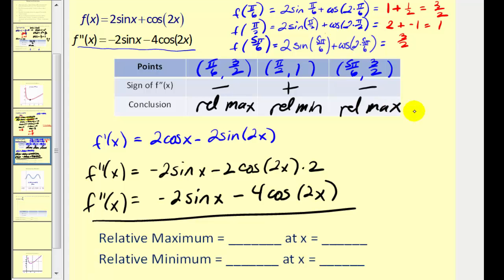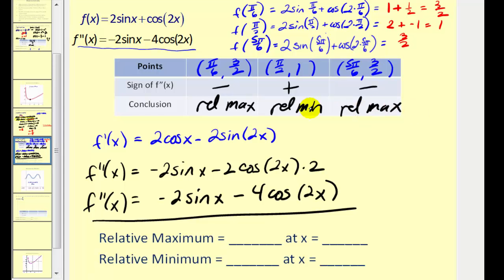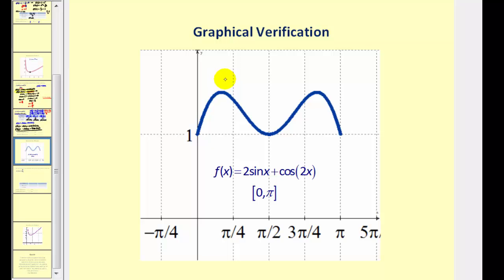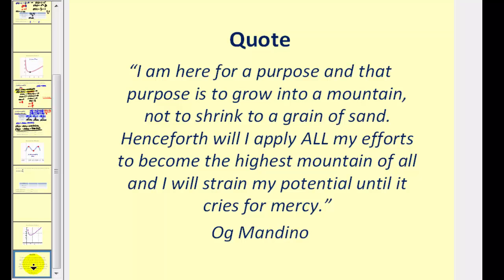Let's go ahead and verify this with a graph. We have two relative maximums of three halves at pi over six and five pi over six. We have a relative minimum of one at pi over two. This verifies our work. And this is how you can use the second derivative to determine relative extrema. Thank you for watching — I'll see you next time.